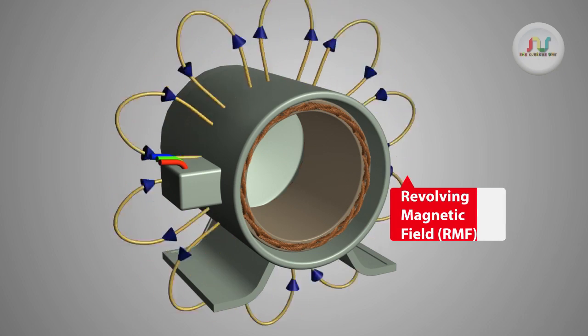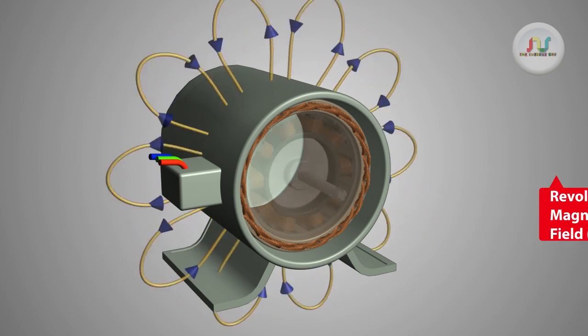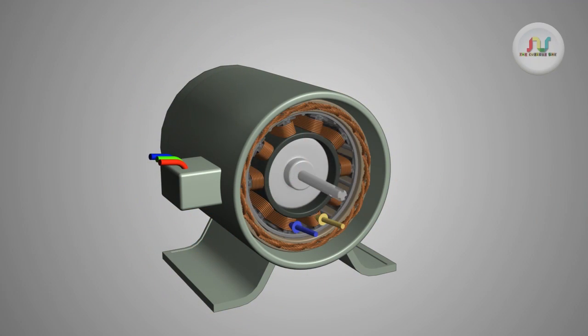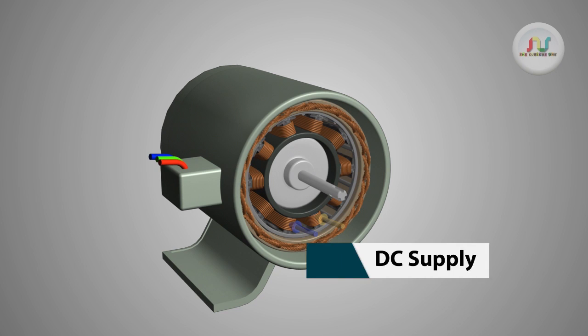The rotor is excited by a DC power supply, so it acts like a permanent magnet, or alternatively the rotor can also be a permanent magnet.